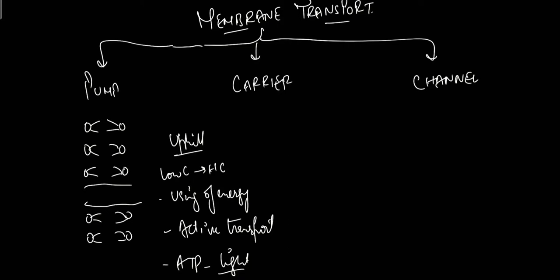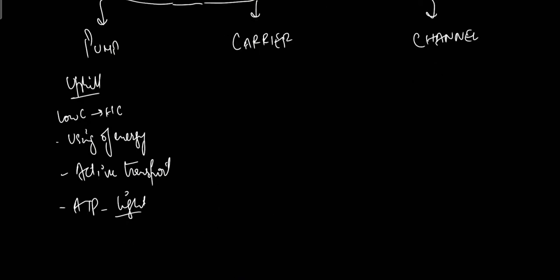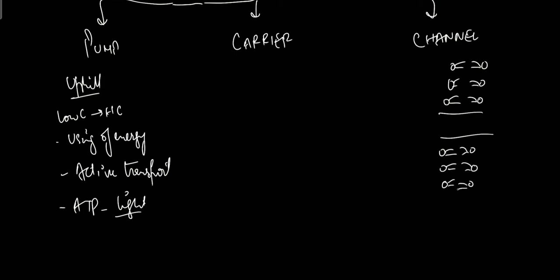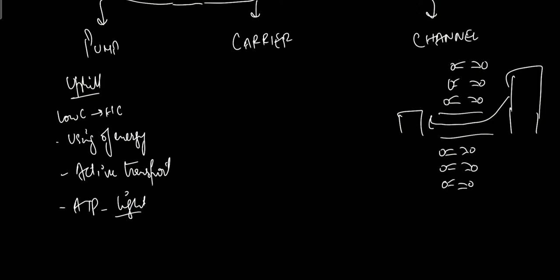The other two — carriers and channels — occur only as downhill movements. They only take solute particles from high concentration to low concentration. Channels are protein transport membranes present in the plasma membrane which freely allow particles to move from high concentration to low concentration only. Since the amount of substance is higher on one side, movement only occurs toward the lower concentration side — this is a downhill, passive movement requiring no energy.